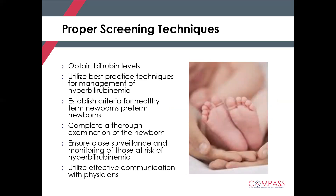Last, but certainly not least, is proper screening techniques. We discussed looking through your facility's current protocols and policies related to neonatal jaundice. Does your facility currently check bilirubin levels on all newborns? Does your facility have access to a transcutaneous bilirubin device? If not, this is a piece of equipment that a business case could be completed to show the necessity for it. Discuss as a team what your current practice is related to bilirubin checks and compare this to best practice. Completing a thorough examination and being aware of risk factors for developing jaundice is so important. Make sure staff are adequately communicating all information to the physician and collaborating on a plan of care.